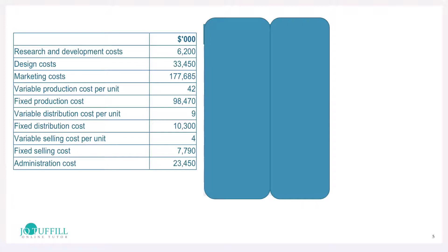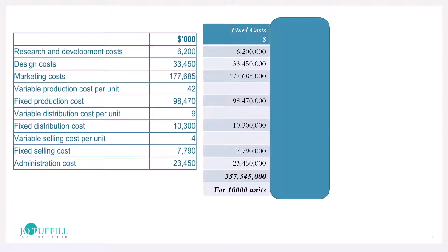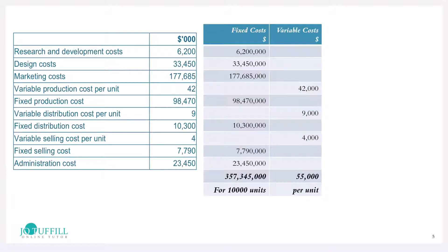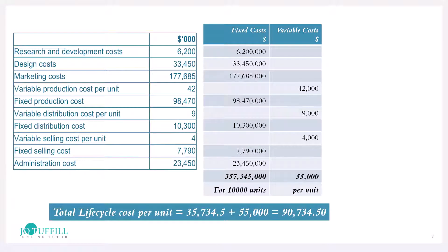To calculate the life cycle cost per unit: first, separate out the fixed costs. Adding them up gives $357,345,000 for the whole 10,000 units. Then separate out the variable costs, which add up to $55,000 per unit. There's no need to multiply those by 10,000 and then divide again. Simply divide the fixed costs by 10,000 units to get $35,734.50 per unit, then add the $55,000 variable cost per unit. The life cycle cost per unit is $90,734.50.